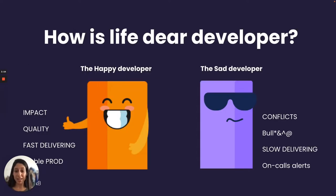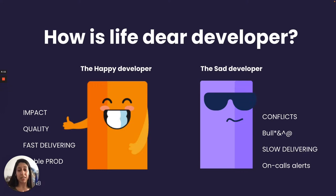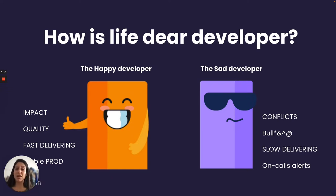A few days ago I met friends from university. When you meet friends who are also developers, there's always the question of how things are going at work — and the answer is usually binary. It's either very happy or very sad. The happy developer is coding most of the time, especially new features, manages to deliver fast and in high quality, and feels the impact on the company's customers.